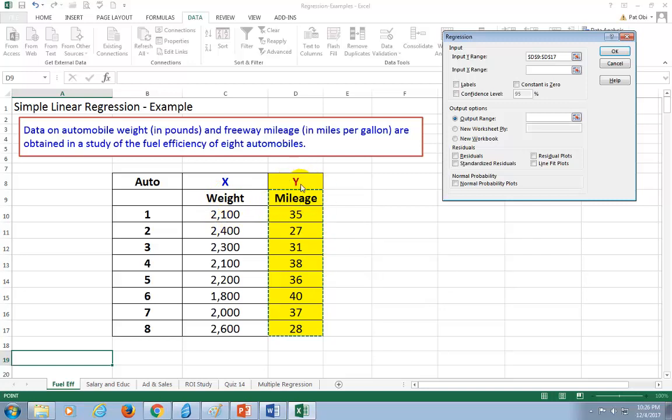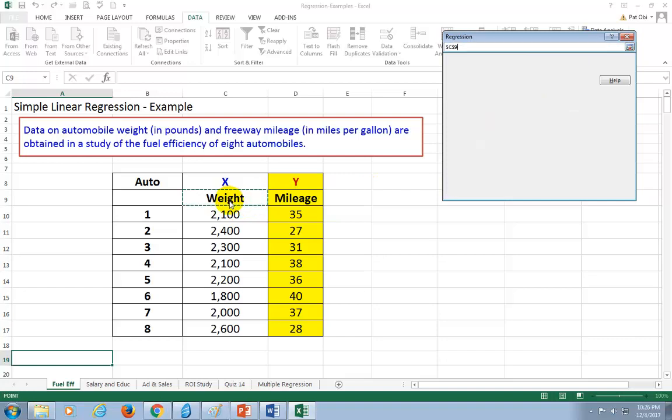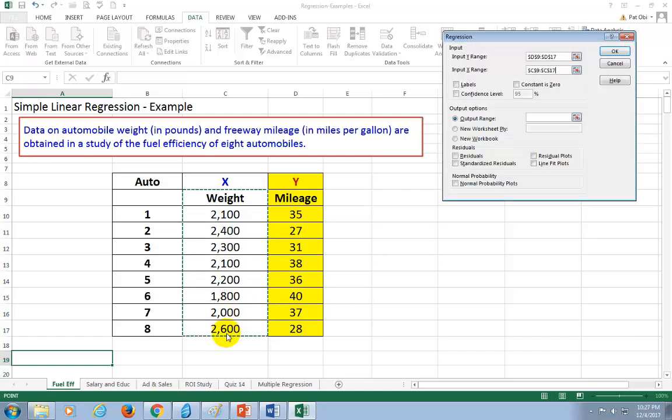So I'm not going to start from Y. Then click here for input X range while cursor is blinking. I click on the word weight and work my way down to the end. And then I make sure I check labels so the computer knows that the first row of data contains labels.